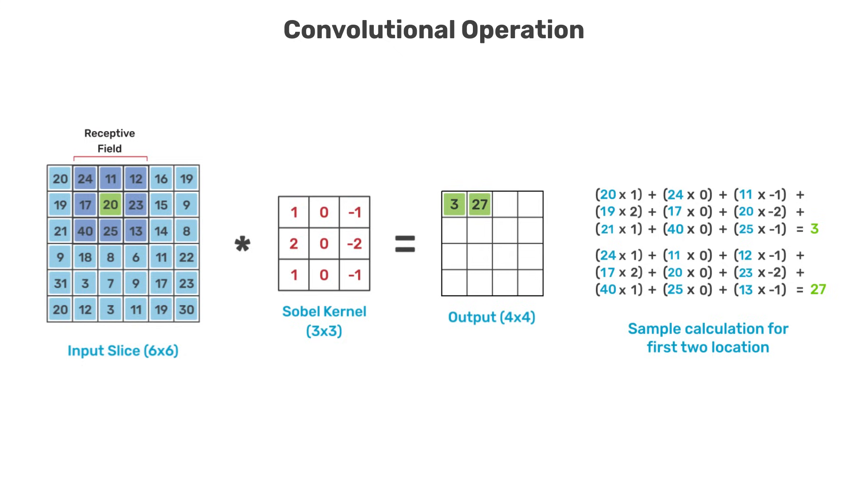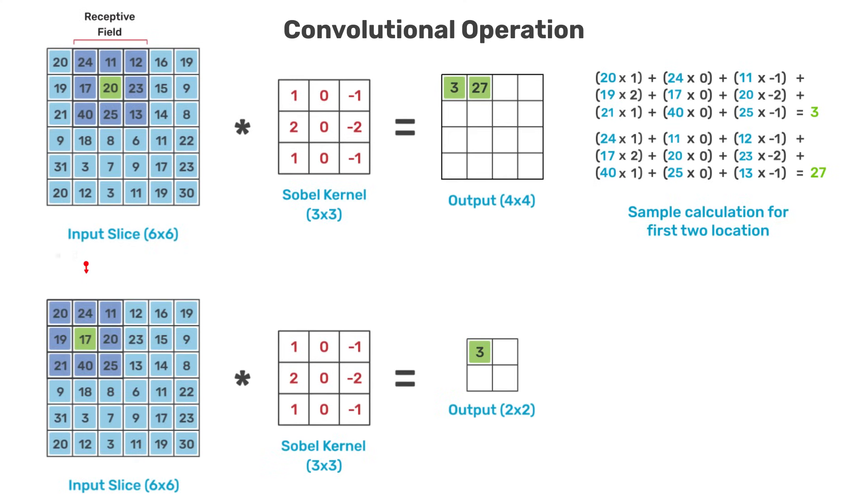However, padding techniques are often used to pad the input image so that the output is the same size as the input. Using a stride larger than 1 will also reduce the size of the output from the convolution operation.